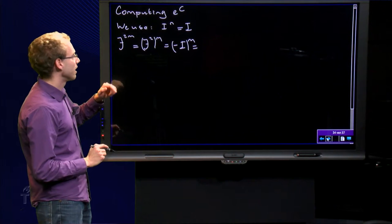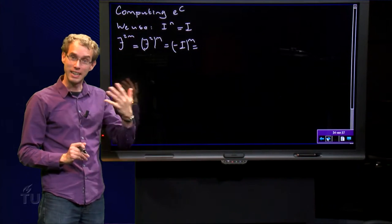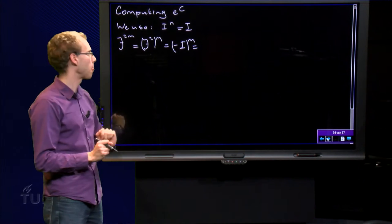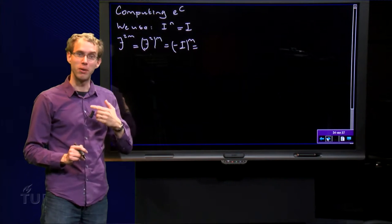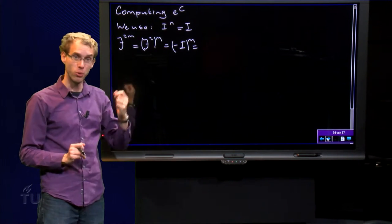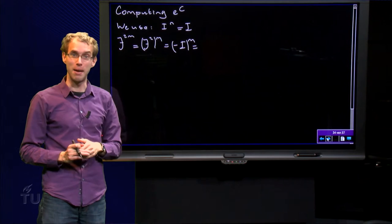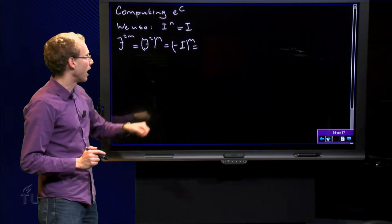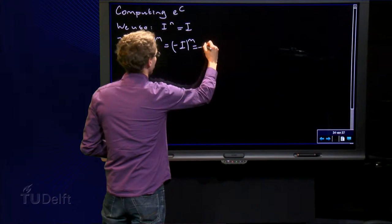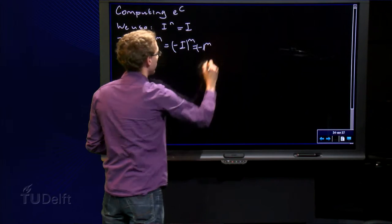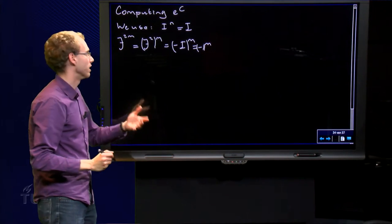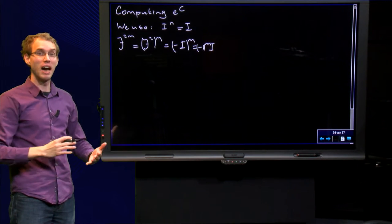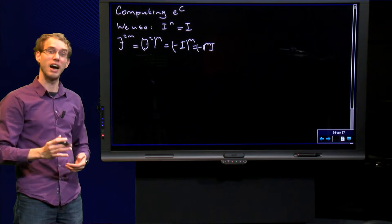We are going to use the following tools. i to the power n — the identity matrix just remains the identity matrix; no problems there. If we compute j to the power 2m, we use j squared to the power m, and since j squared equals minus i, j squared to the power m yields minus 1 to the power m times i, which is just i. So we are able to compute high powers of i and also high powers of j.